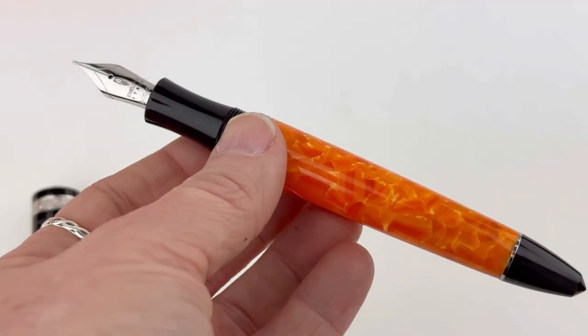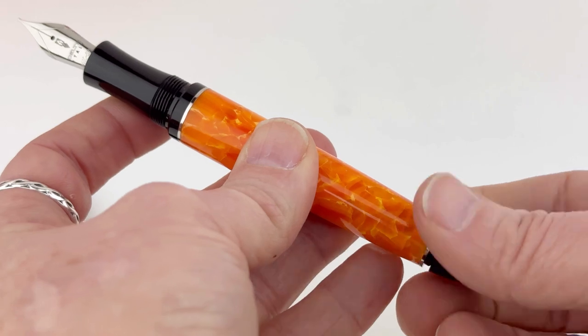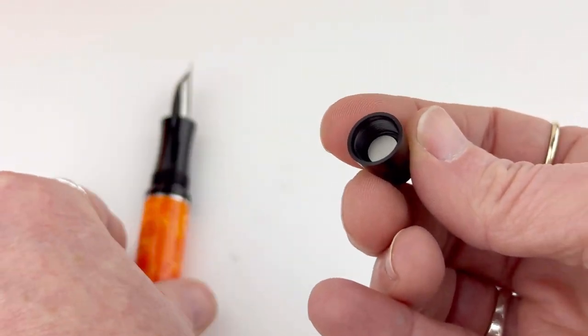The Delta Right Balance Dulce Vita fountain pen has a cartridge converter filling system, and it also features, as the name suggests, the Right Balance system that Delta created.